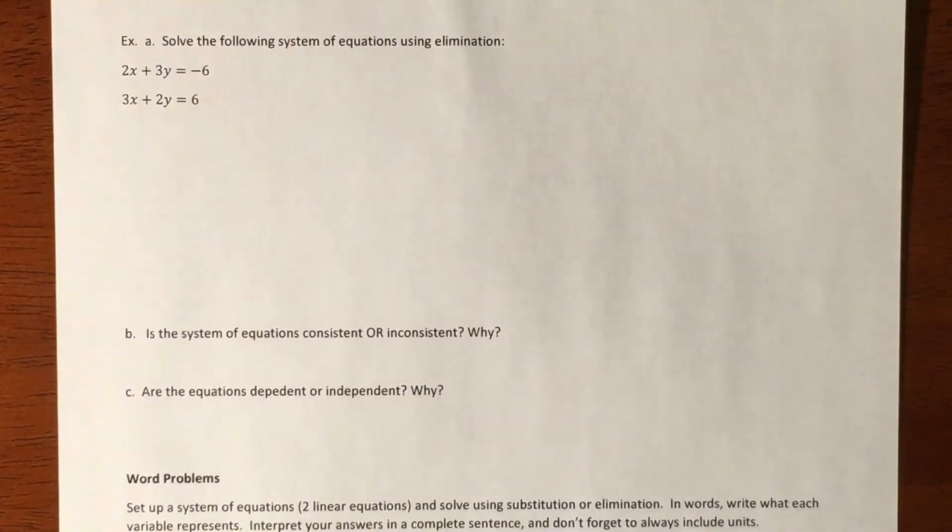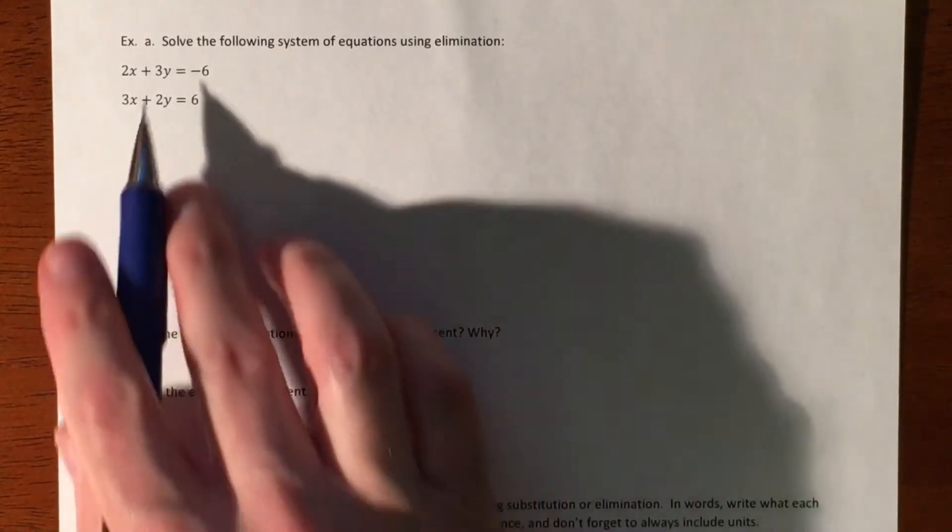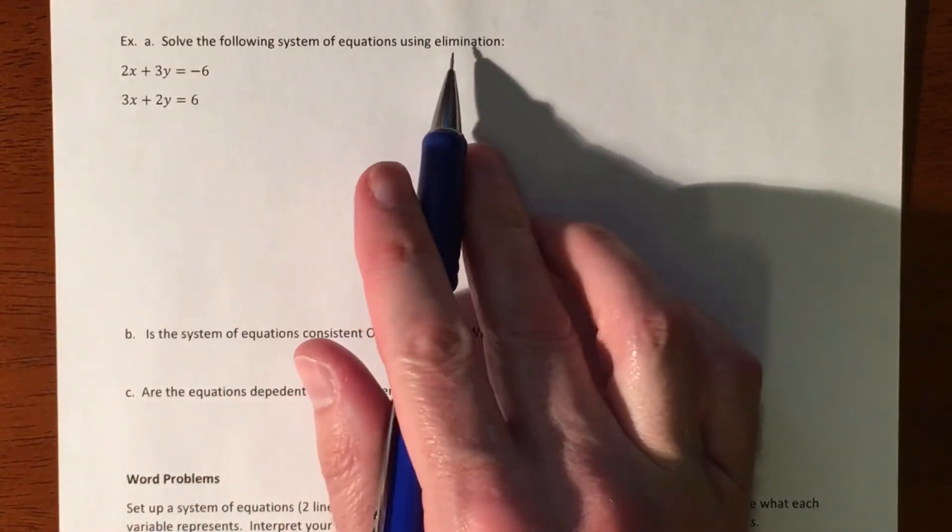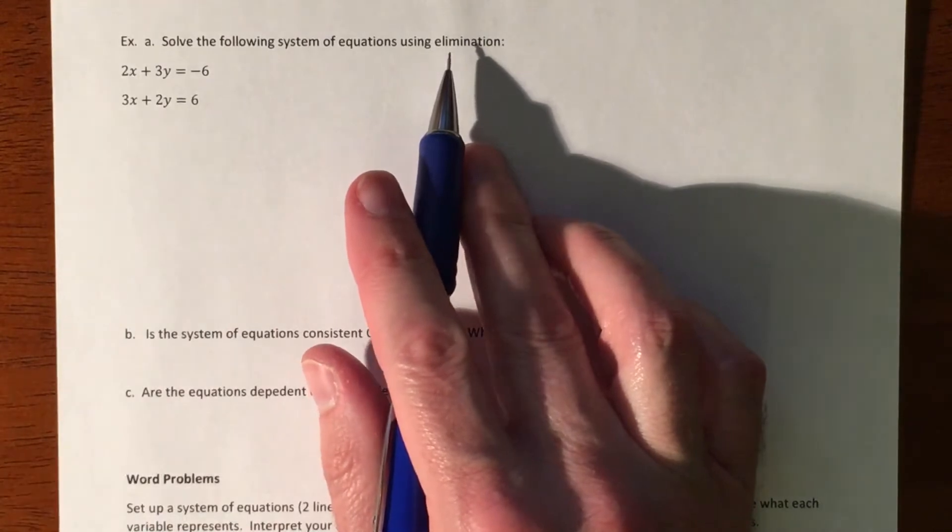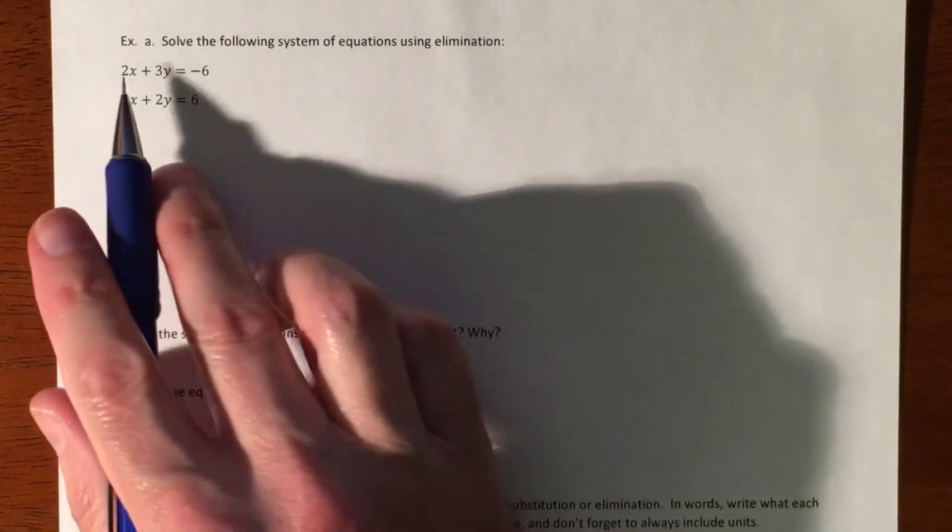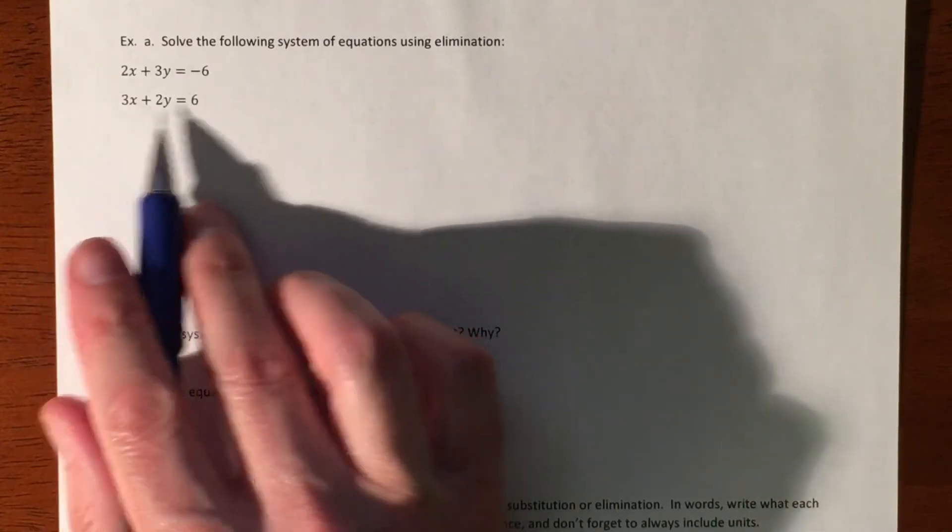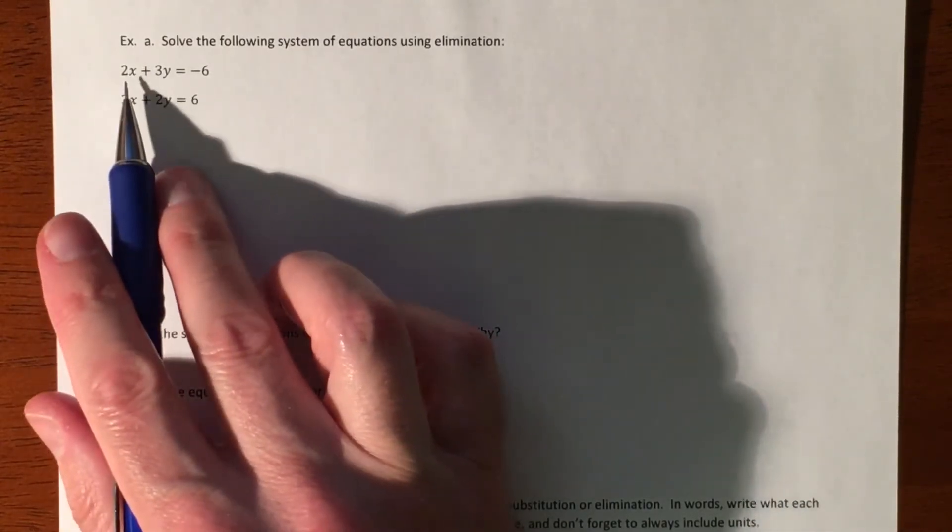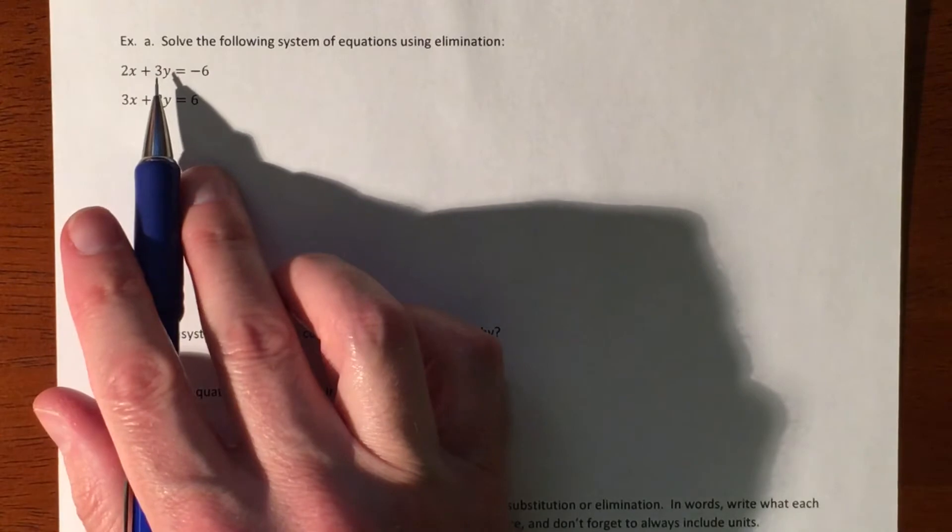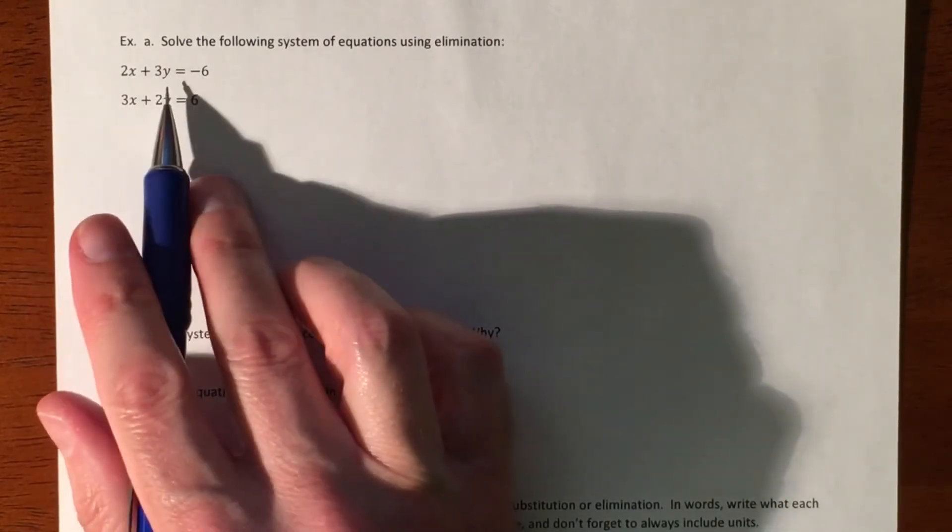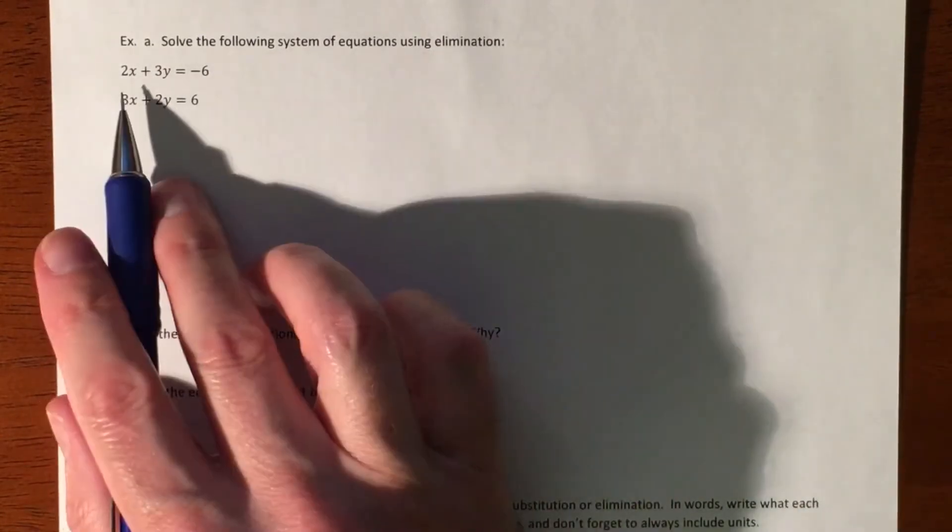In this example, we're going to do one last system of equations. This problem recommends elimination. You can use whatever method you want, it really doesn't matter, but if I were to try to use substitution, I would have to try to get one of these variables by itself, and trying to get any of them by themselves while avoiding fractions is not going to happen. So it's already kind of set up for elimination.